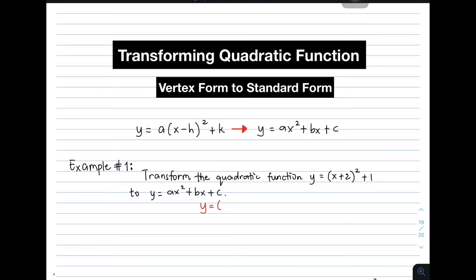We have y equals x plus 2 squared plus 1. First, simplify what's in the parenthesis. You need to expand it. When you simplify it, that will become x squared plus 4x plus 4 plus 1.